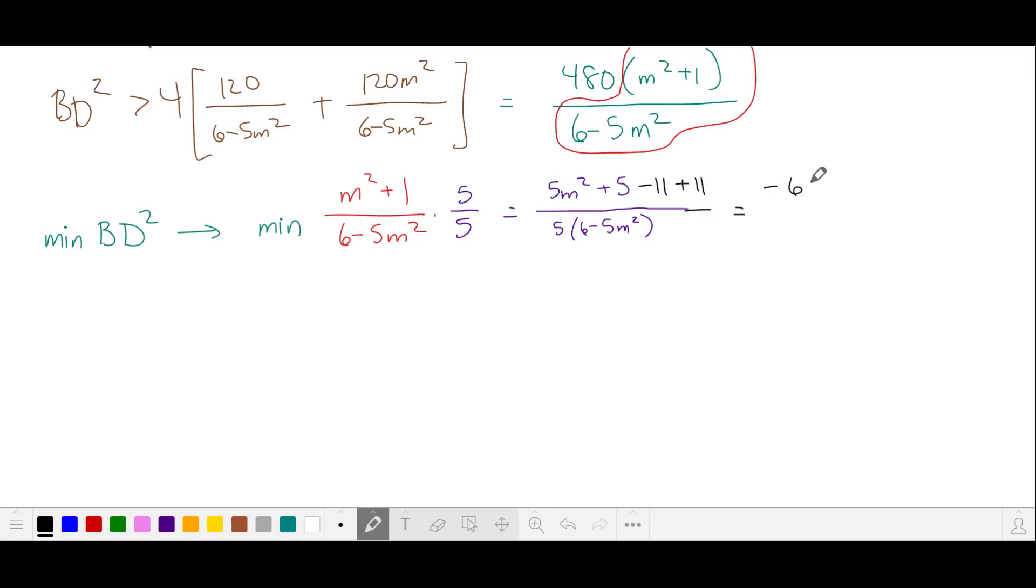I'm going to subtract 11 and add 11 in the numerator. This is going to give me negative 6 plus 5m² plus 11. And then if I factor out a negative 1, I get the same factor in the denominator. This first part of the fraction here is negative 1 over 5. And then we're left with 11 in the numerator.